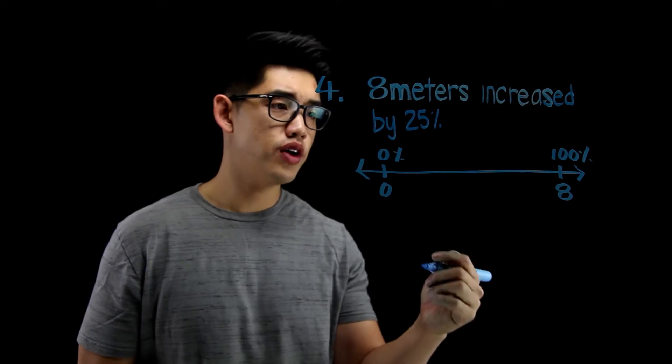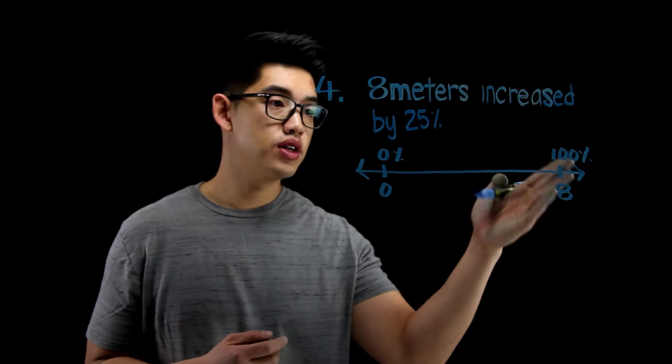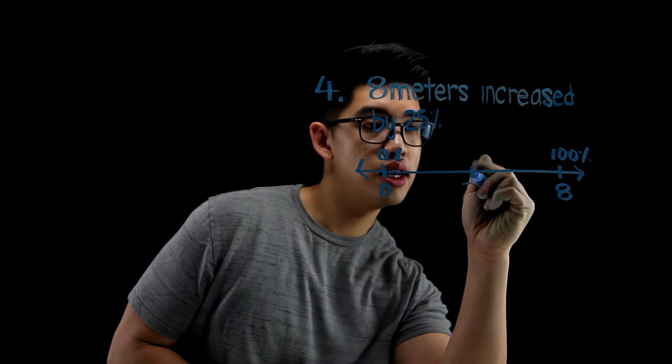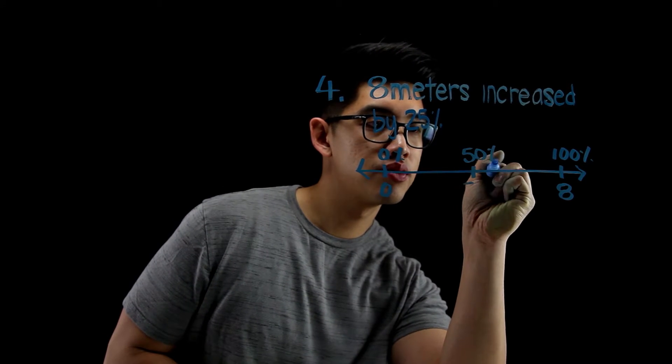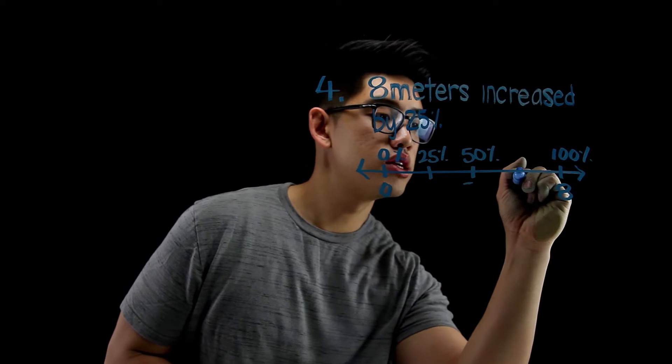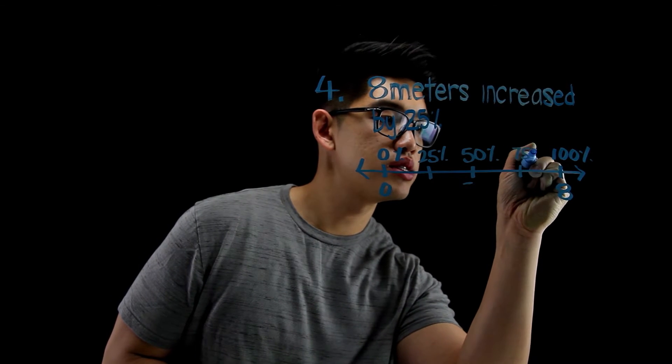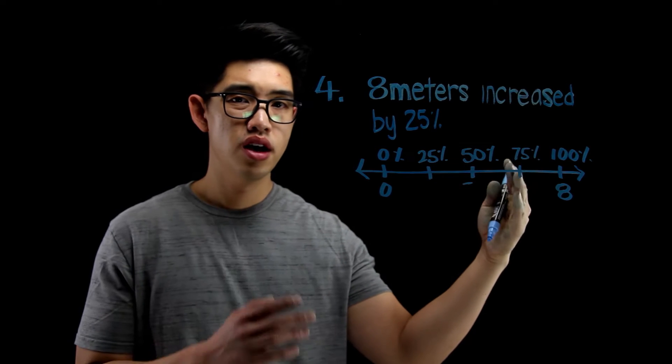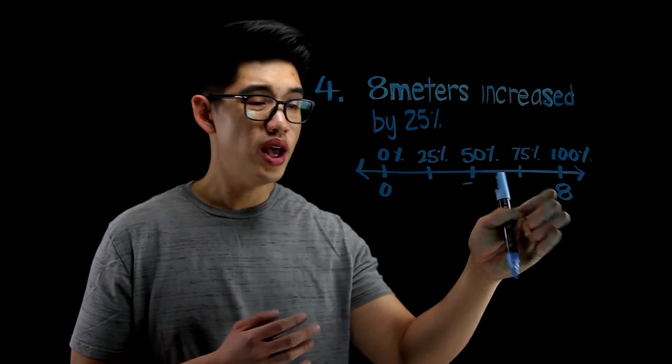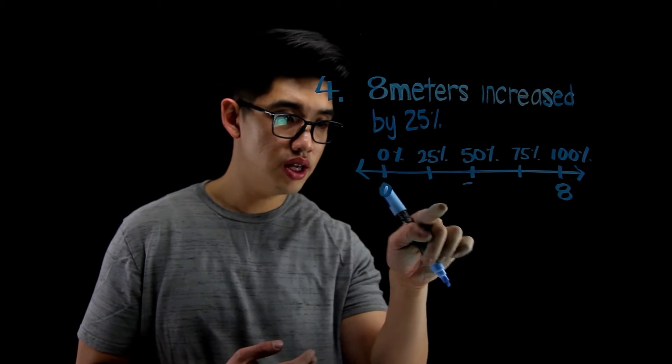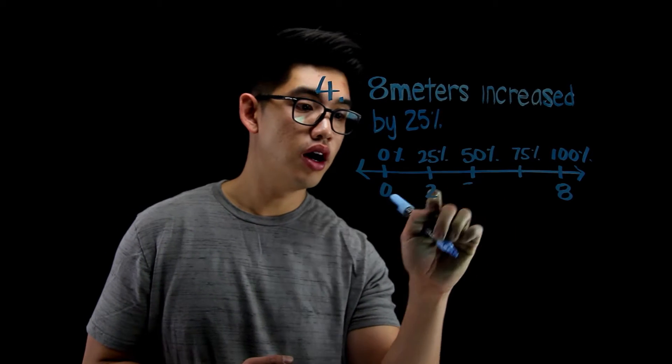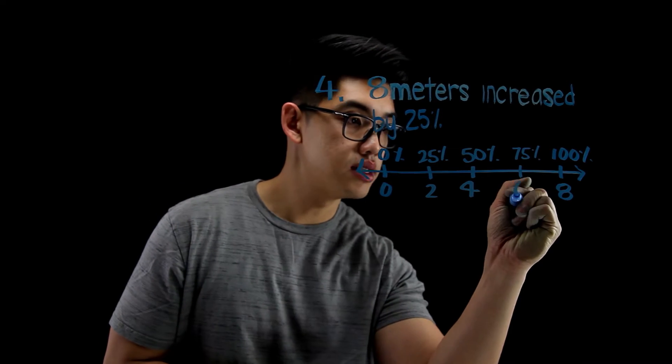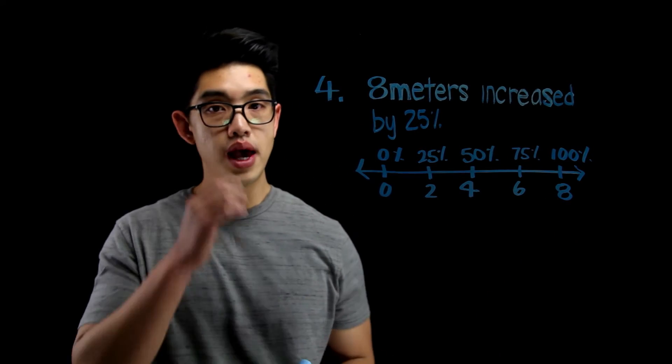Now, I want to increase this by 25%. What I can do is I can divide this up into 4 and say maybe this is 50%, 50%. This one right here is 25%. This one right here is 75%. And since this is divided into 4 increments, I can do 8 divided by 4. So I know that from here to here, that's 2. From here to here, 2 plus 2, that's going to be 4. And then 4 plus 2 again, that's going to be 6. And 6 plus 2, that gives you 8.